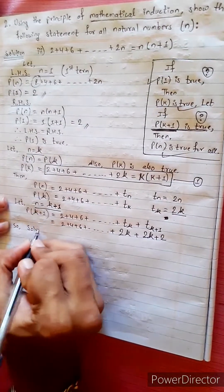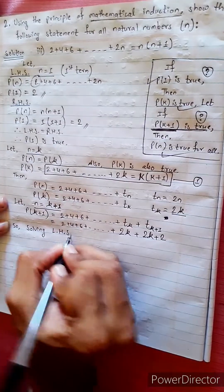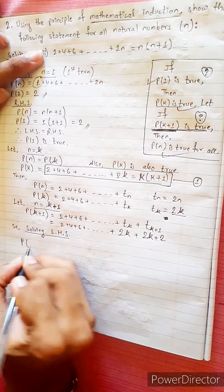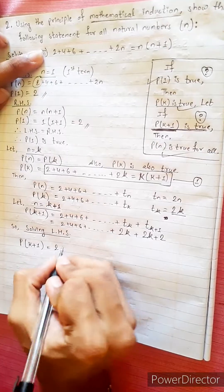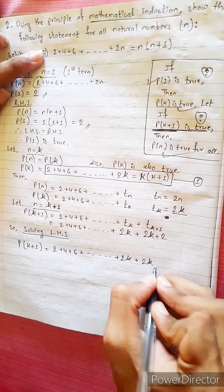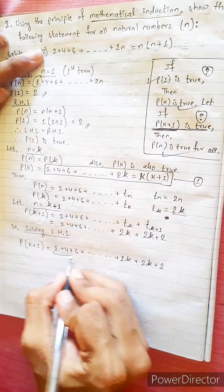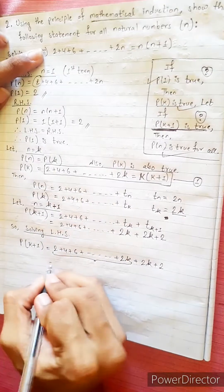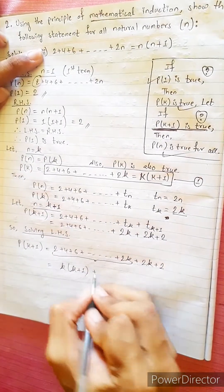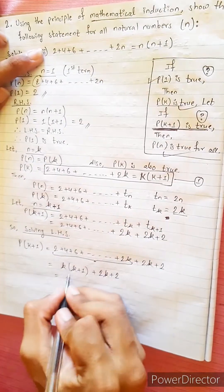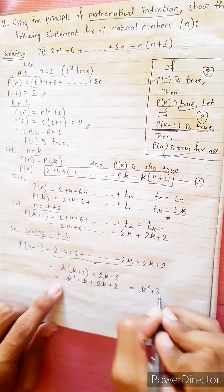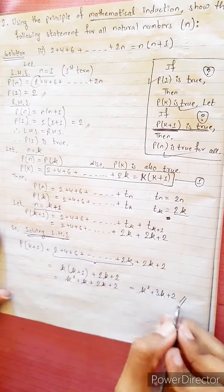Solving LHS: the series equals 2 plus ... plus 2k plus (2k plus 2). This equals k squared plus k plus 2k plus 2, giving k squared plus 3k plus 2. This is LHS, and LHS equals RHS.